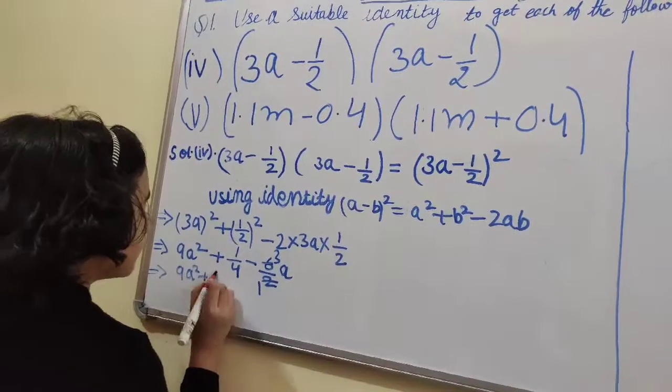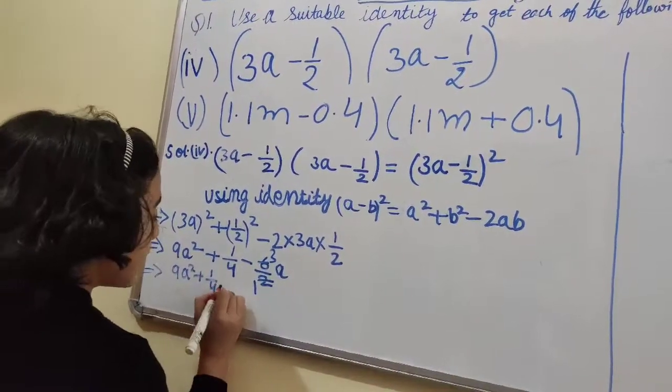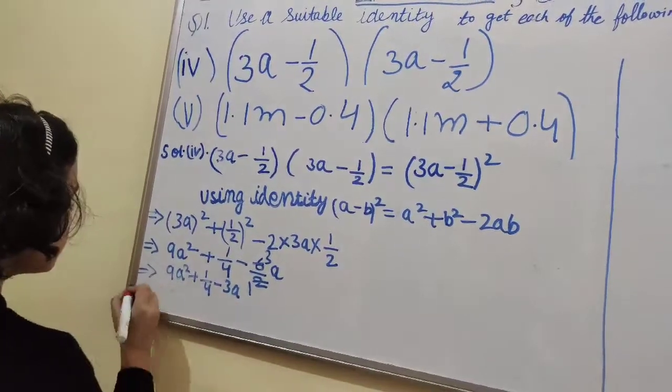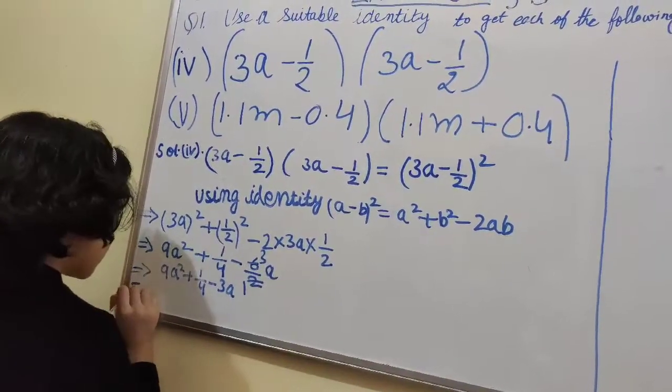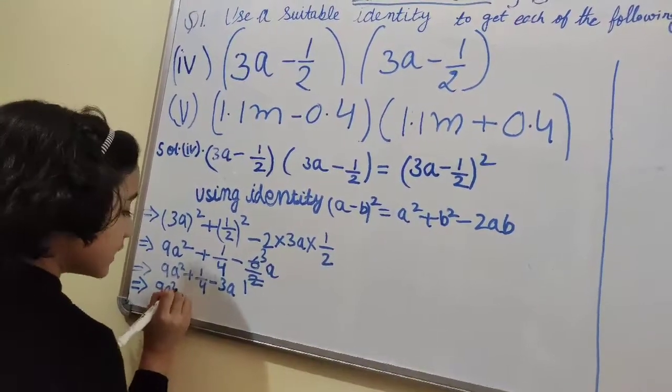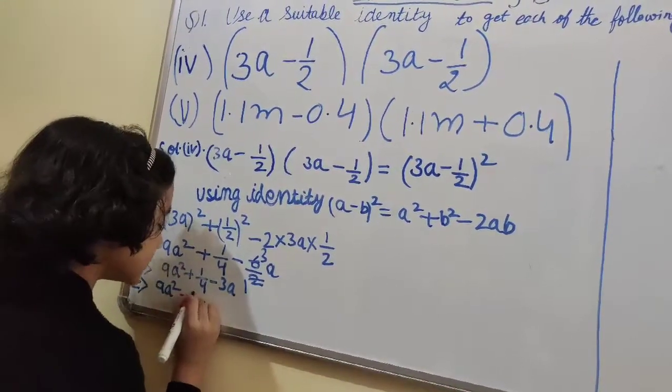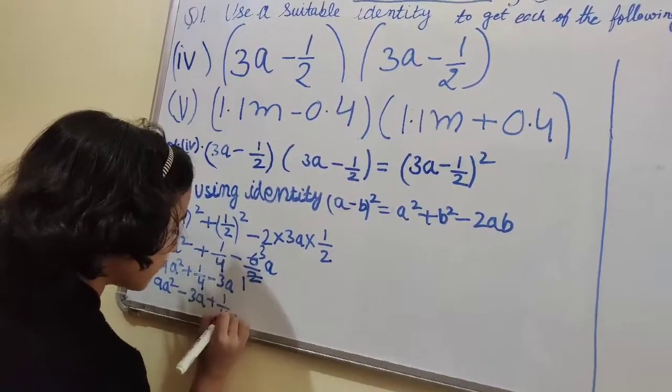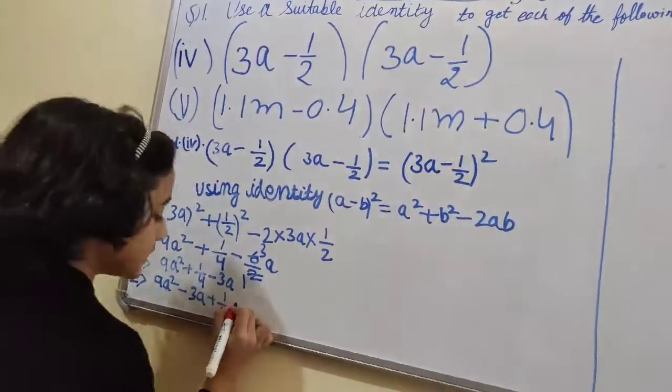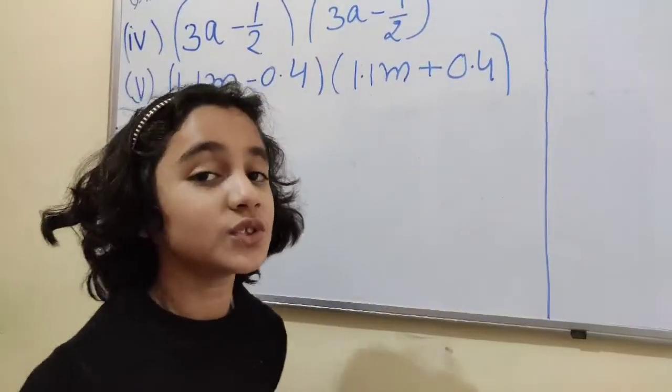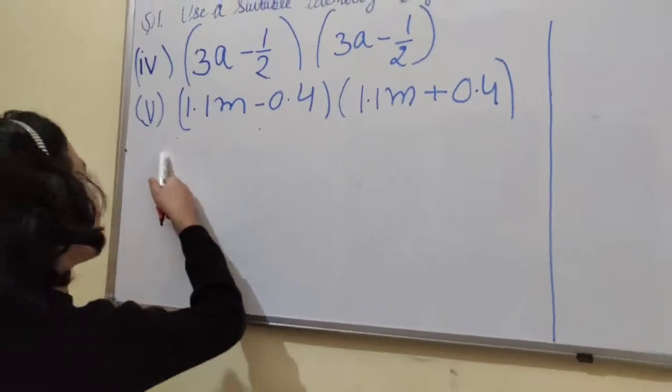Which implies 9a² + 1/4 - 3a, which is equal to 9a² - 3a + 1/4. This is our answer.